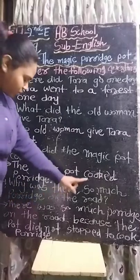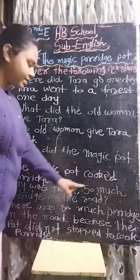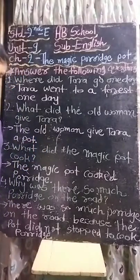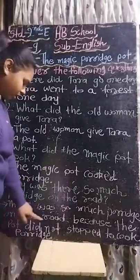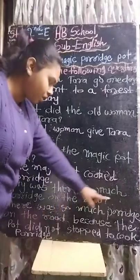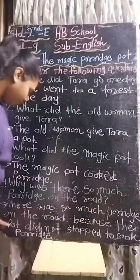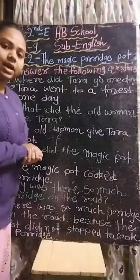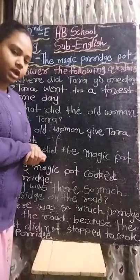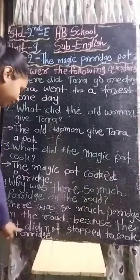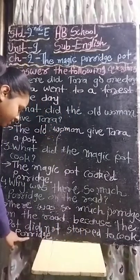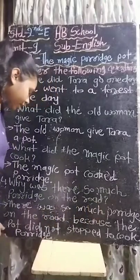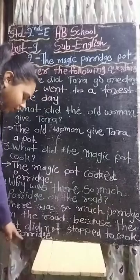Fourth one: Why was there so much porridge on the road? (Rod ke upar itni sari porridge kyu thi?) Answer: There was so much porridge on the road because the pot did not stop cooking porridge.